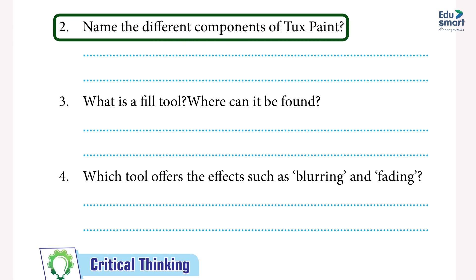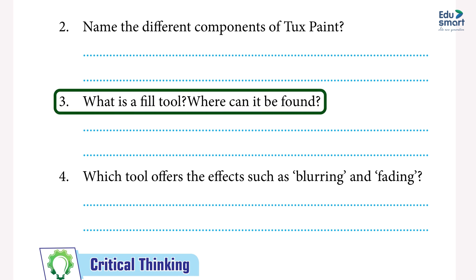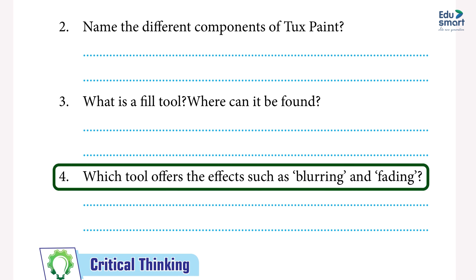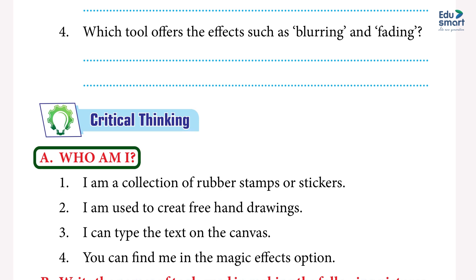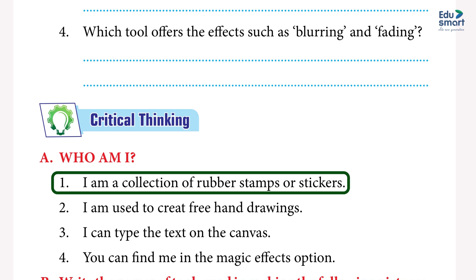Answer: canvas drawing area, color palette, selection tools, drawing tools. 3. What is the fill tool and where can it be found? Answer: this tool fills the picture with a color; it is found in the Magic effects option. 4. Which tool offers effects such as blurring and fading? Answer: the Magic tool offers a variety of unique effects such as blurring and fading for drawings.